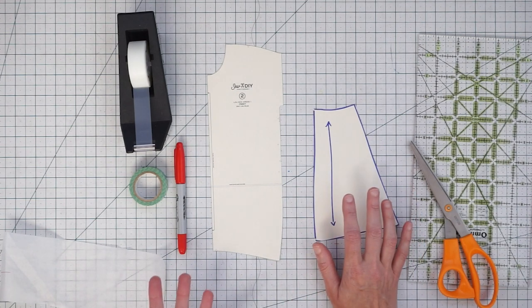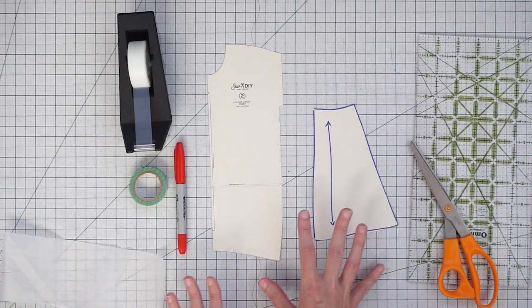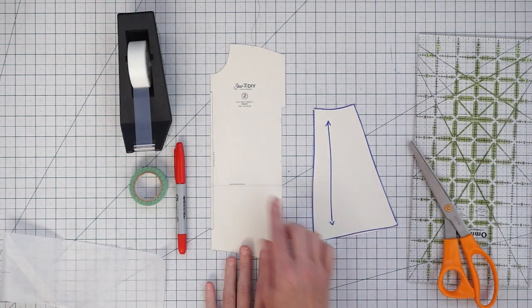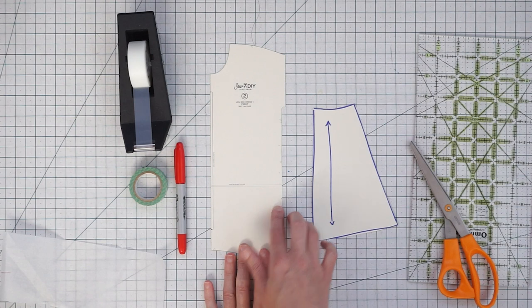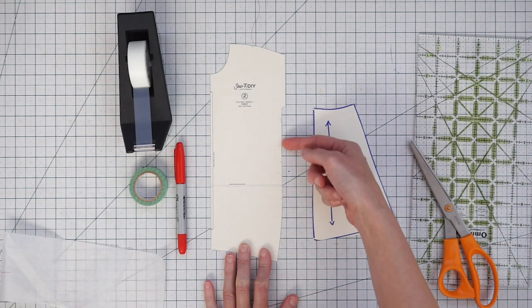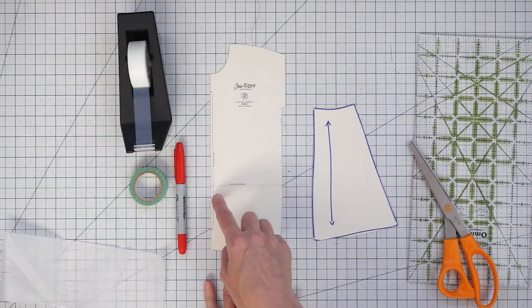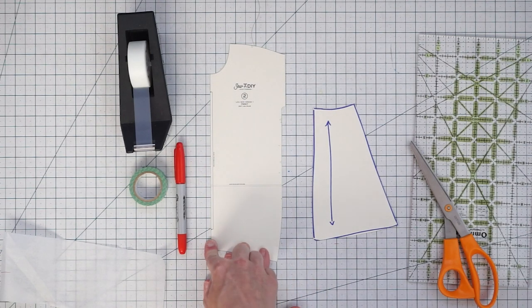With any pattern, you're going to want to determine where to put a lengthen-shorten line. This pattern comes with a lengthen-shorten line already drawn in. This lengthen-shorten line is below the pocket placement and it's perpendicular to our grain line or fold.